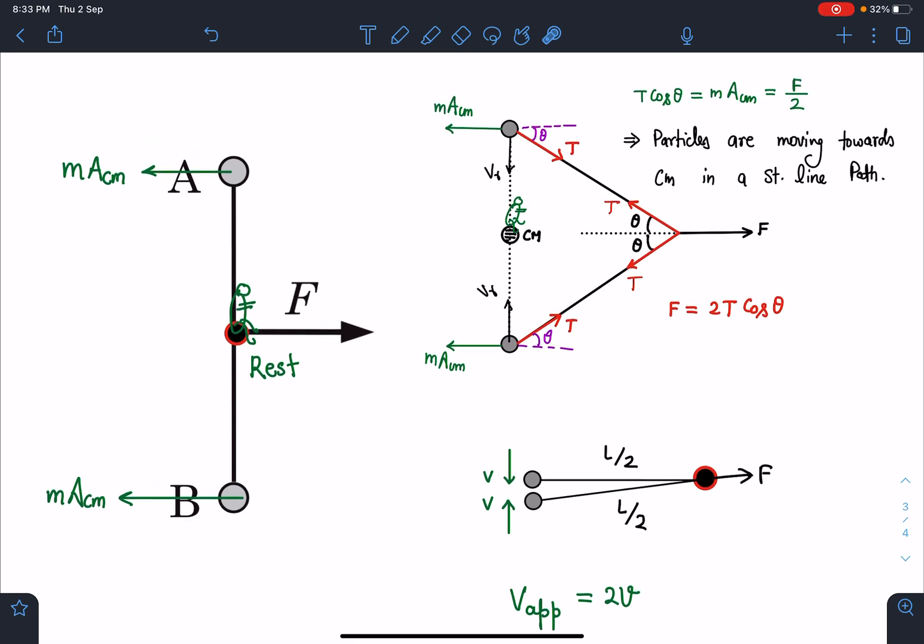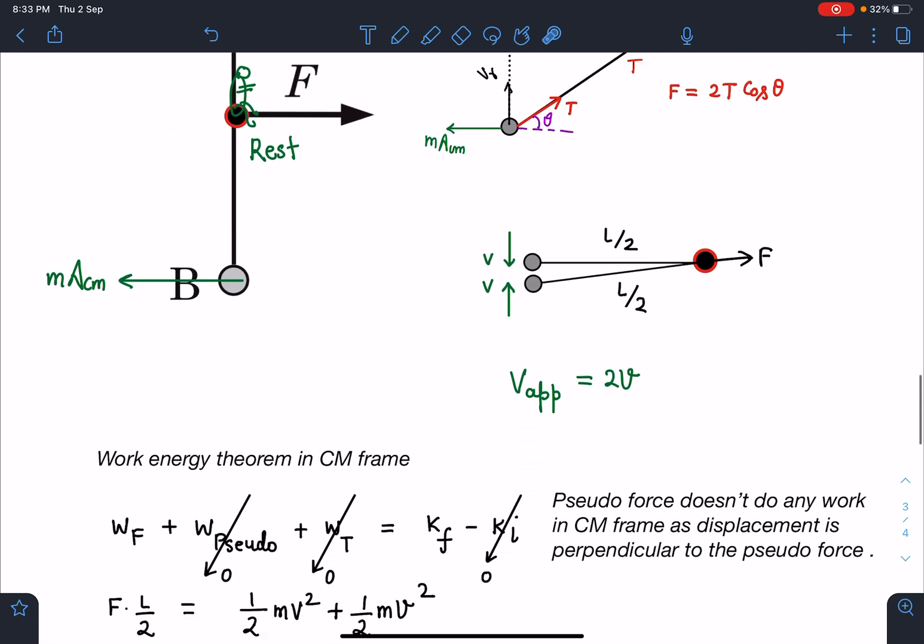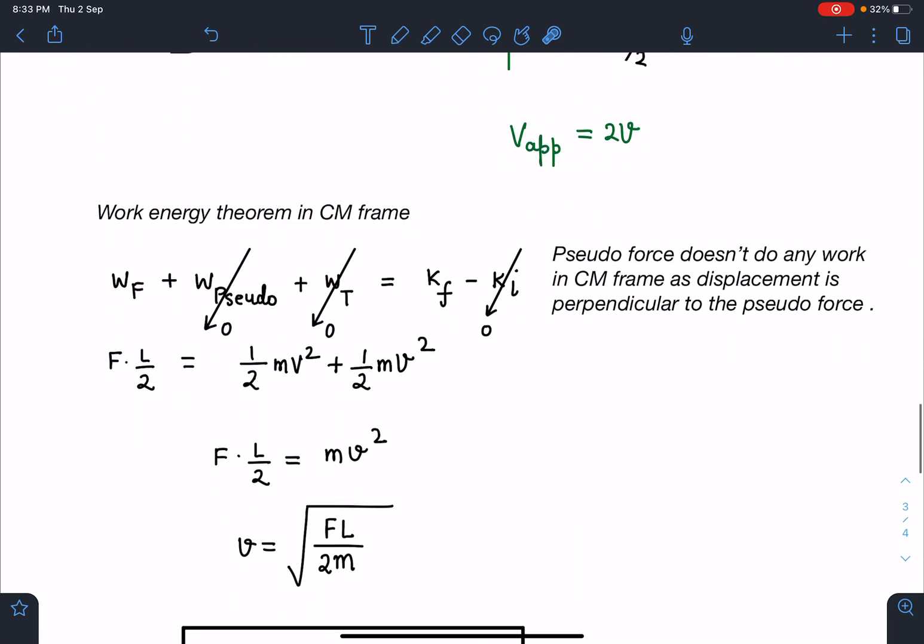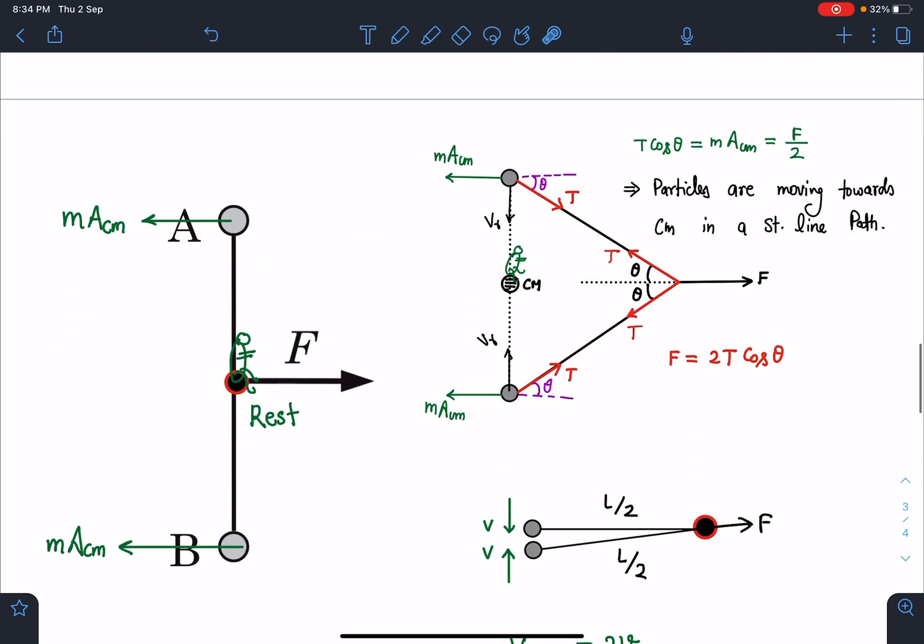So on each particle, on the combined system, I can apply. We have to consider pseudo force work done, we have to consider tension T, and we have to consider the work done by this force also in center of mass frame. So work energy theorem in CM frame I can write: W_F plus W_pseudo plus W_tension equals change in kinetic energy.